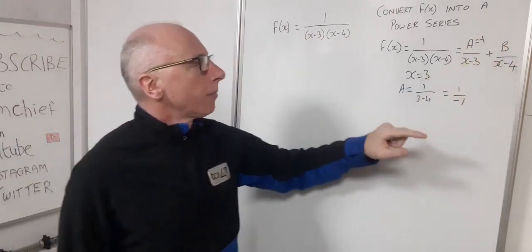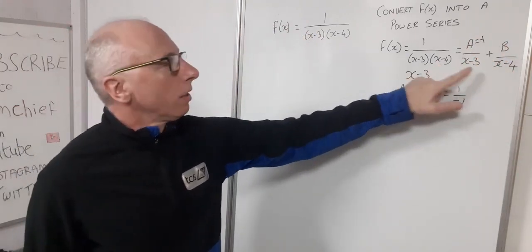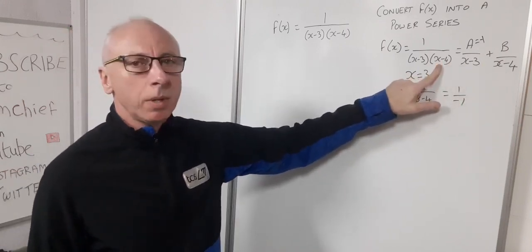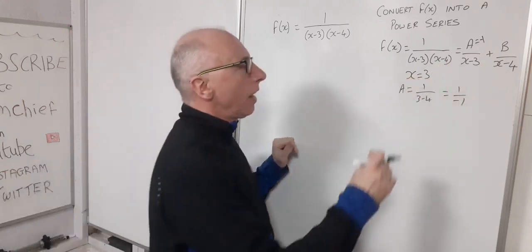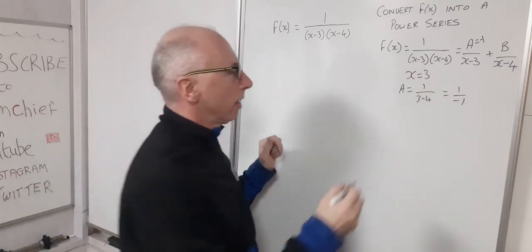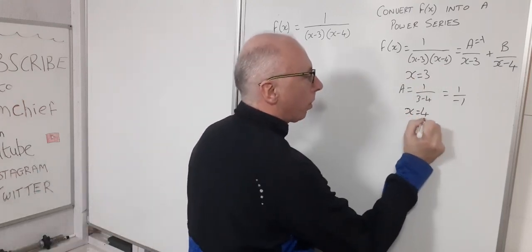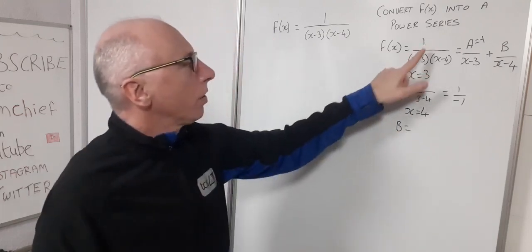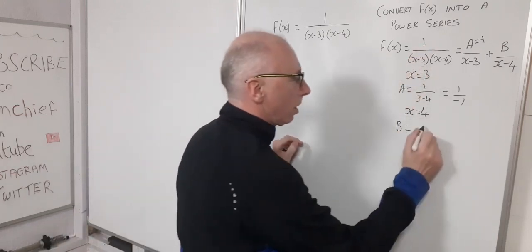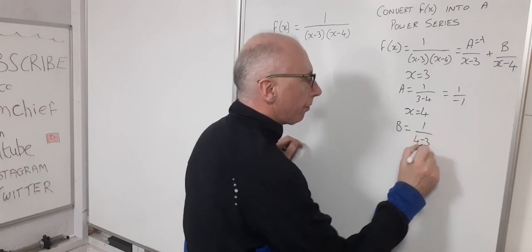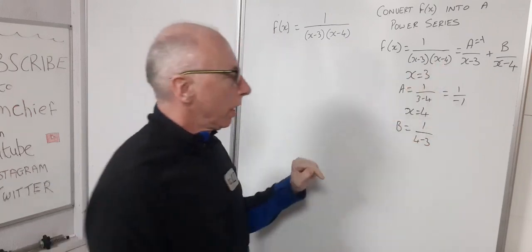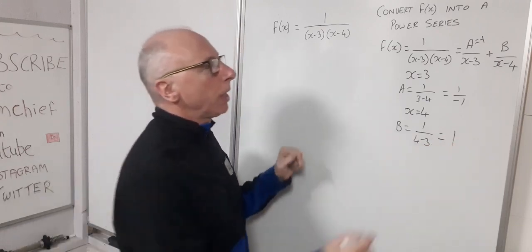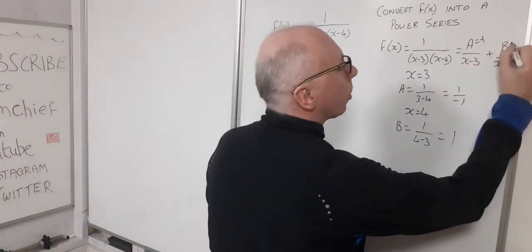Now let's find B. For B over (x-4), to make that term disappear, we want x = 4. So B = 1 / (4-3), and this other term disappears. So 1 / (4-3) just equals 1, meaning B = 1.